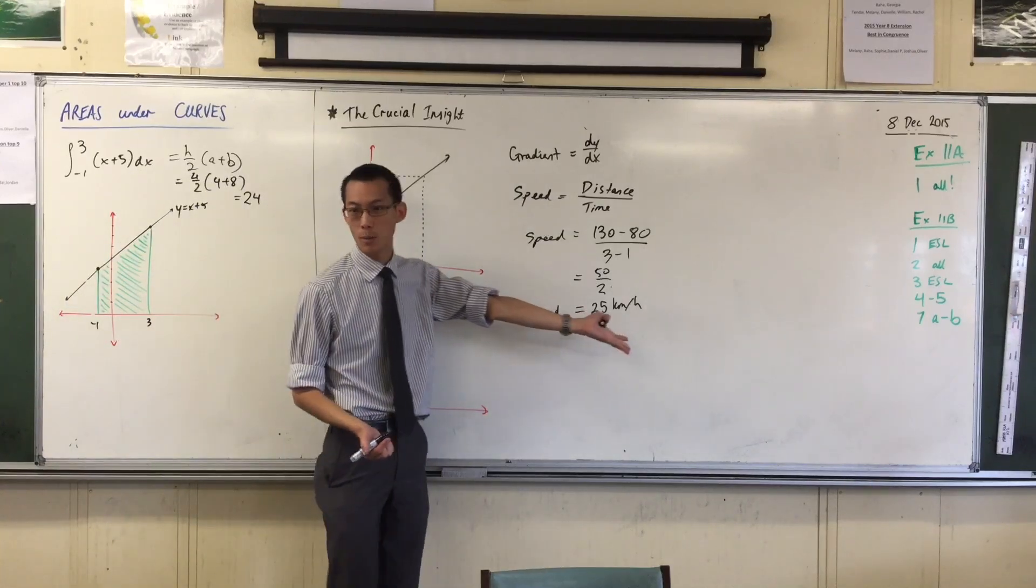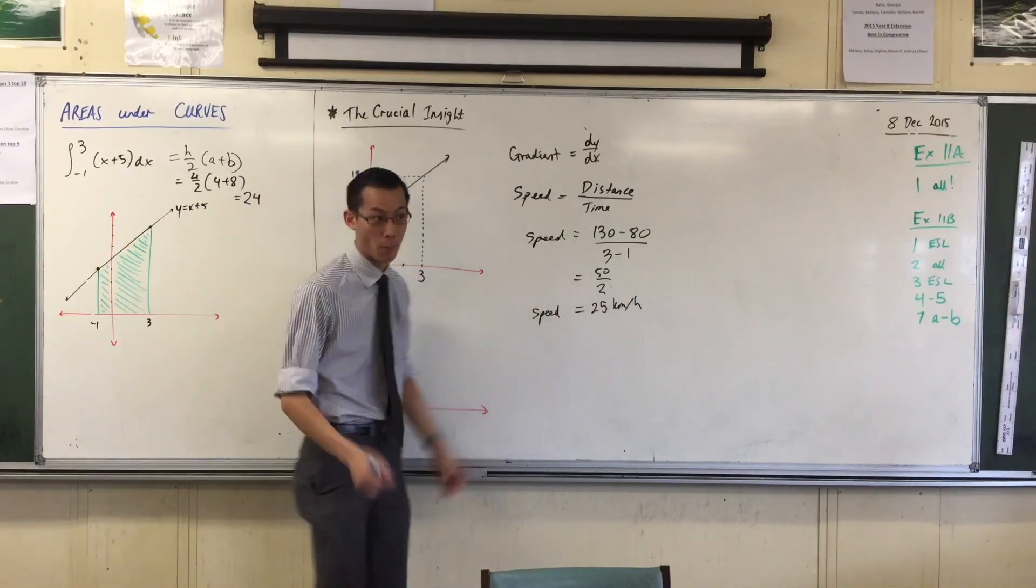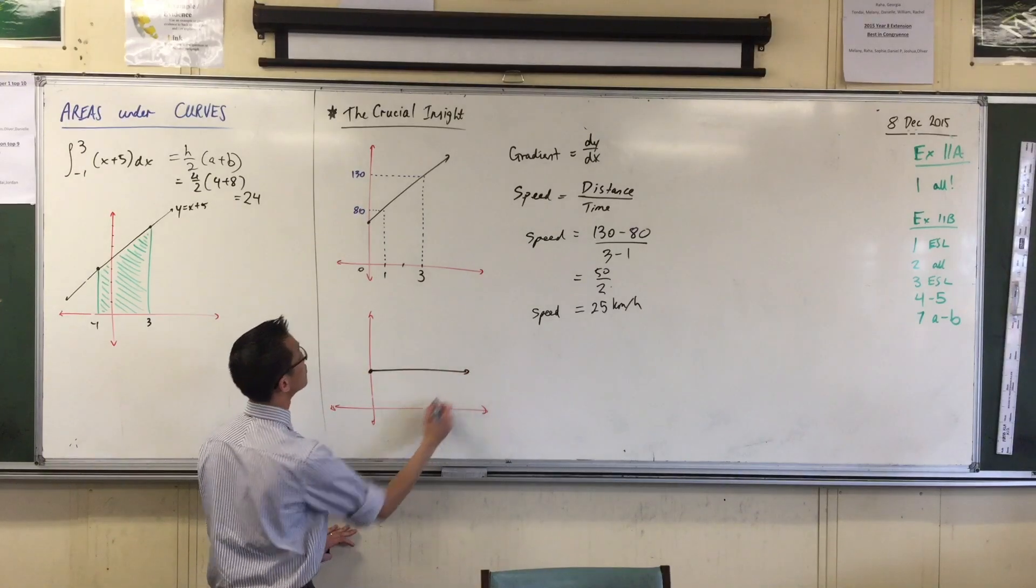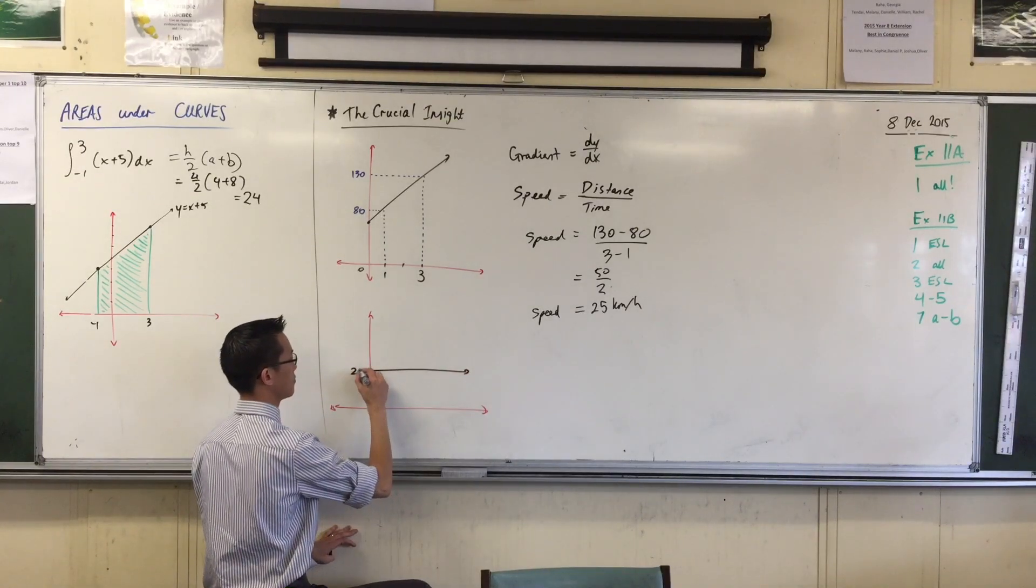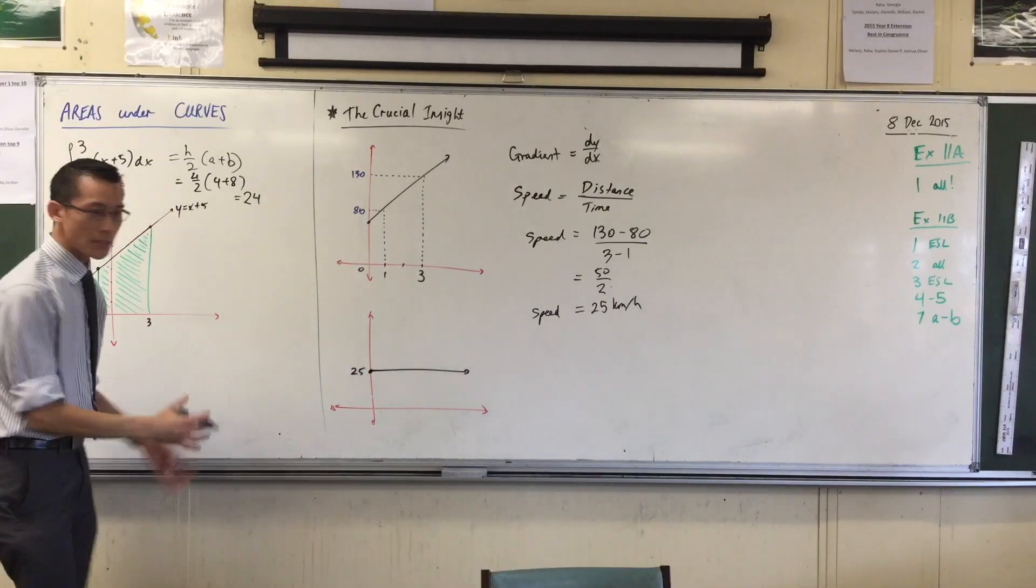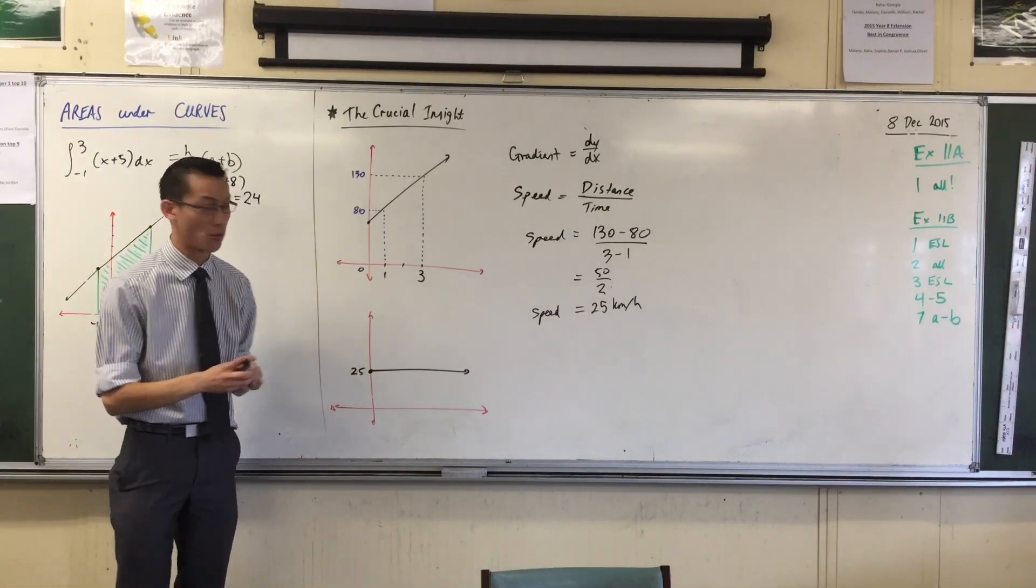Now, the speed is always 25 kilometers per hour, so it happens to be a very boring graph. It looks like this. Yes, interesting, right? Okay, now, is the important thing I want to get across to you? Actually, many important things, one of many.